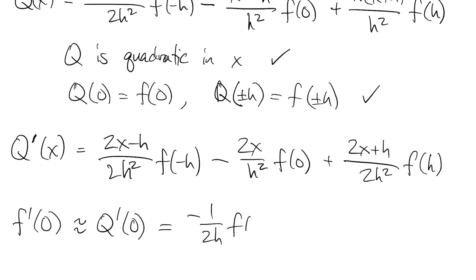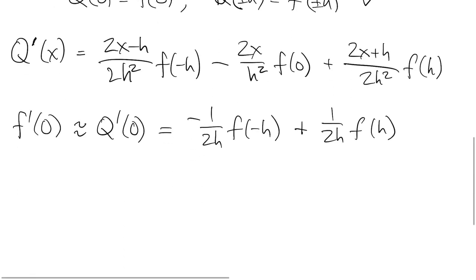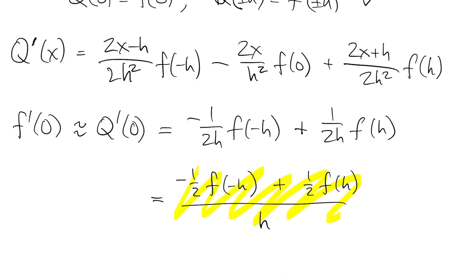Finally, we estimate f prime at zero by q prime at zero, which is a simple linear combination of the f values. This is our third finite difference formula, and we call it a centered difference.